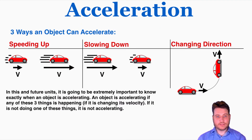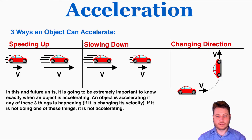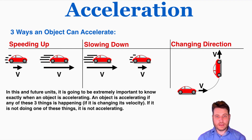There are three ways that an object can accelerate. In high school physics, we never use the word deceleration — we always use the word acceleration to mean any change in velocity, even if the size of the velocity is getting smaller. Another situation where an object is accelerating is where it's changing direction, even while keeping the same speed. If the magnitude of velocity stays the same but the direction changes, that is also an example of acceleration.